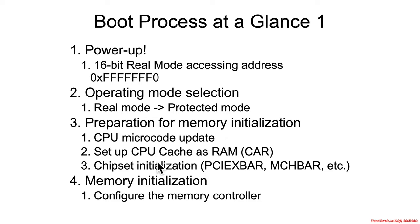Then there's setting up the CPU for cache as RAM, or CAR. At the point where code transitions to traditional C code compiled by a normal compiler, you can only do that if you have something like a stack. If you're executing directly off the flash chip, you don't have a stack — you can't just read and write directly to flash. Cache as RAM is a workaround where the CPU cache, which is trivially read-writable, is modified to act as if it was RAM, and the instruction pointer is set into that area so it can operate like a stack.